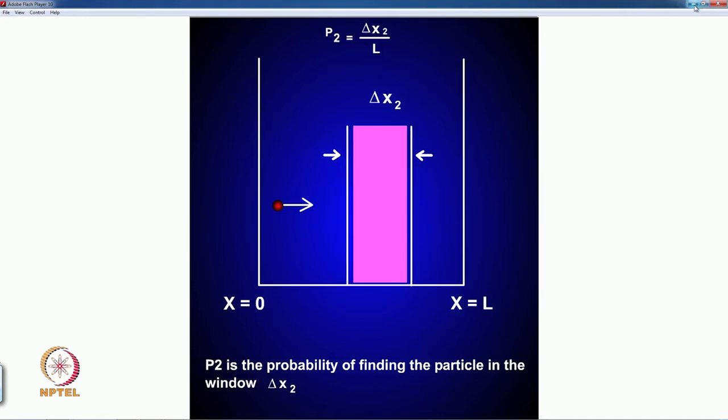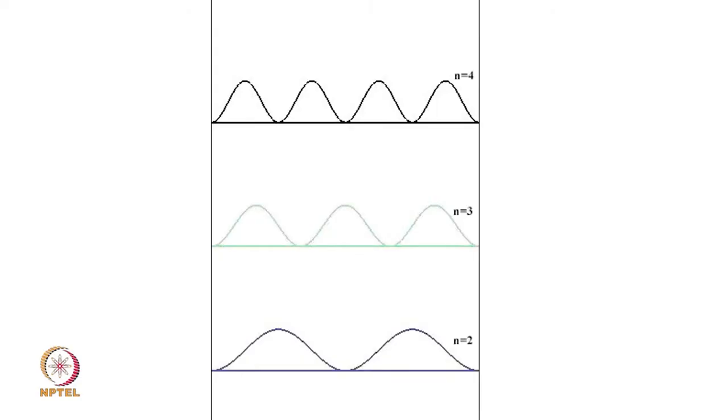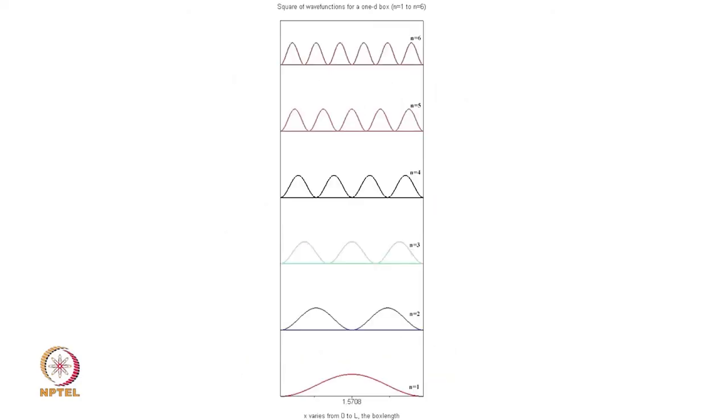In this particular case we see a slightly different result you see that the probability is not uniform and the probability is also not the same for different energies at any given location. So, let us look at this particular graph here.